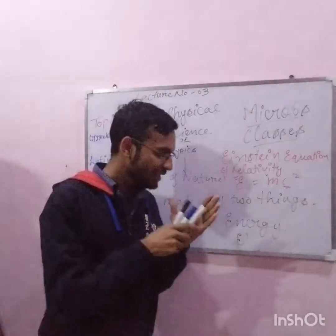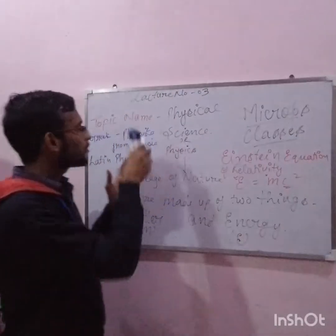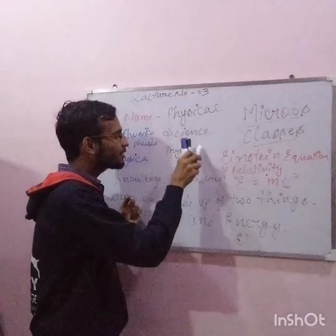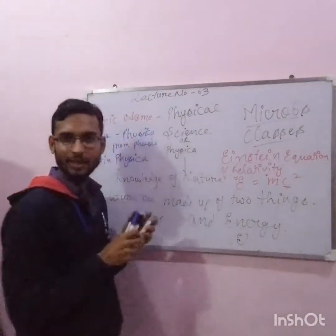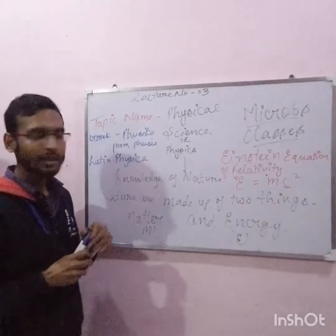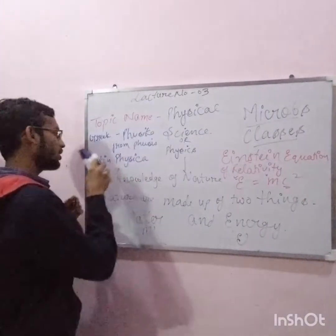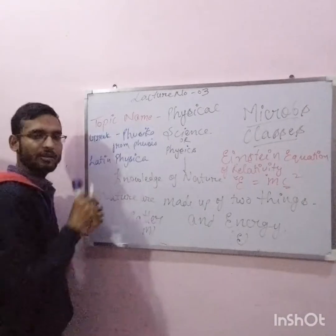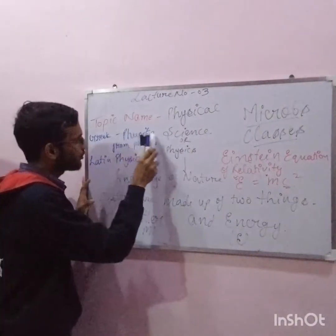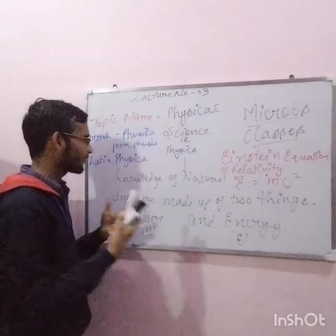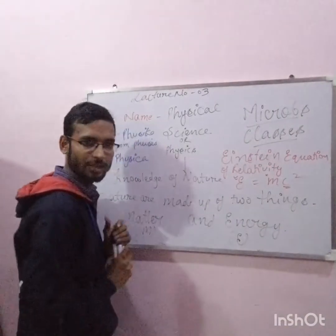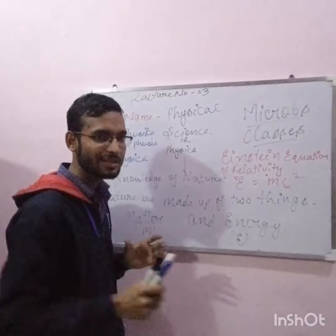Physical science is physics. The term 'physics' came from the Greek word 'Fusica' and the Latin word 'Fusica'. In all of this, what is nature? What is physics or physical science?